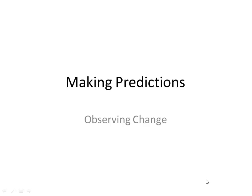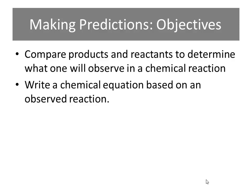In making predictions, we are going to look at chemical reactions and be able to predict what's going to happen in that reaction based on the chemical equation and phases of matter. We should be able to compare products and reactants to see or predict what we'll see in a reaction, and we should also be able to write a chemical equation based on what we see in a reaction.